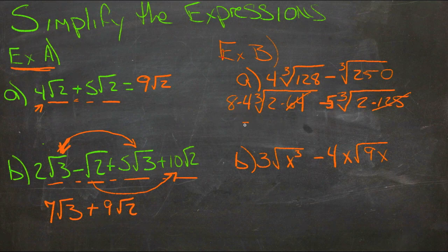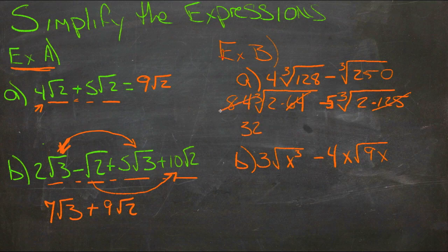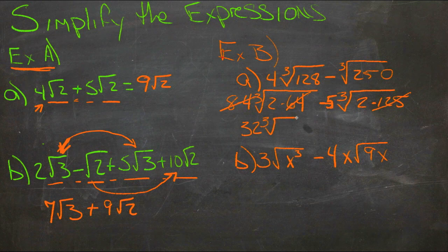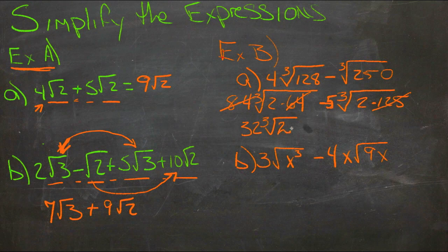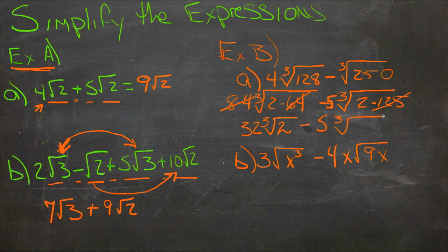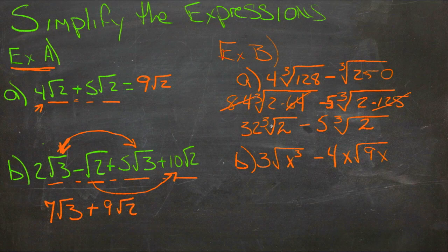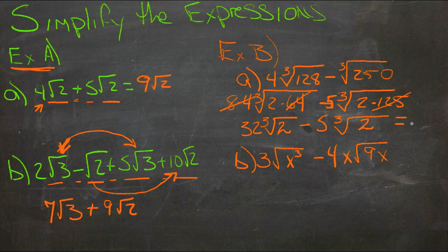And then we'll rewrite it below. 8 times 4 is 32. So that's taken care of. The 64 is gone, so we have just cube root of 2. So 32 cube roots of 2 minus 5 cube roots of 2 is all that's left underneath there.